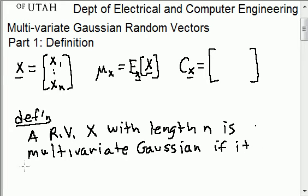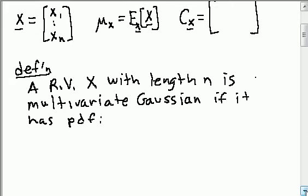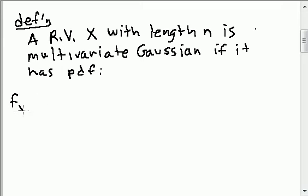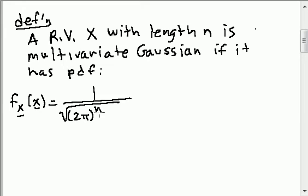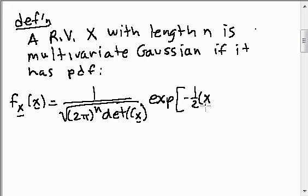It's multivariate Gaussian if it has pdf as follows: fx of x equals 1 divided by the square root of 2π to the n and the determinant of the covariance matrix, then multiplied by e to the minus one-half times x minus its mean transpose, the inverse of the covariance matrix, times x minus its mean again.